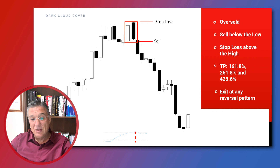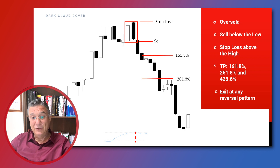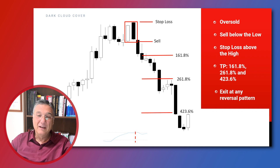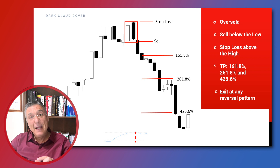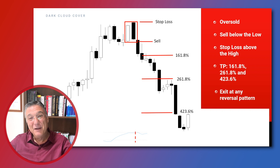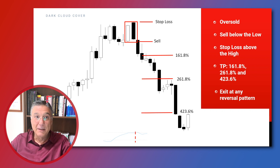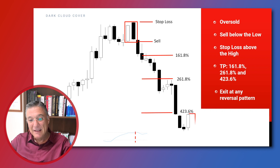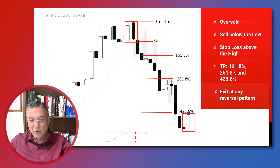For the take-profit strategy we use Fibonacci extensions: we close part of the trade at 161.8%, another part at 261%, and another part at 423.6%. We allow a small portion to run even lower to benefit from the downward momentum, but any time we identify a reversal pattern in the opposite direction, we exit the remaining position — as is the case here.